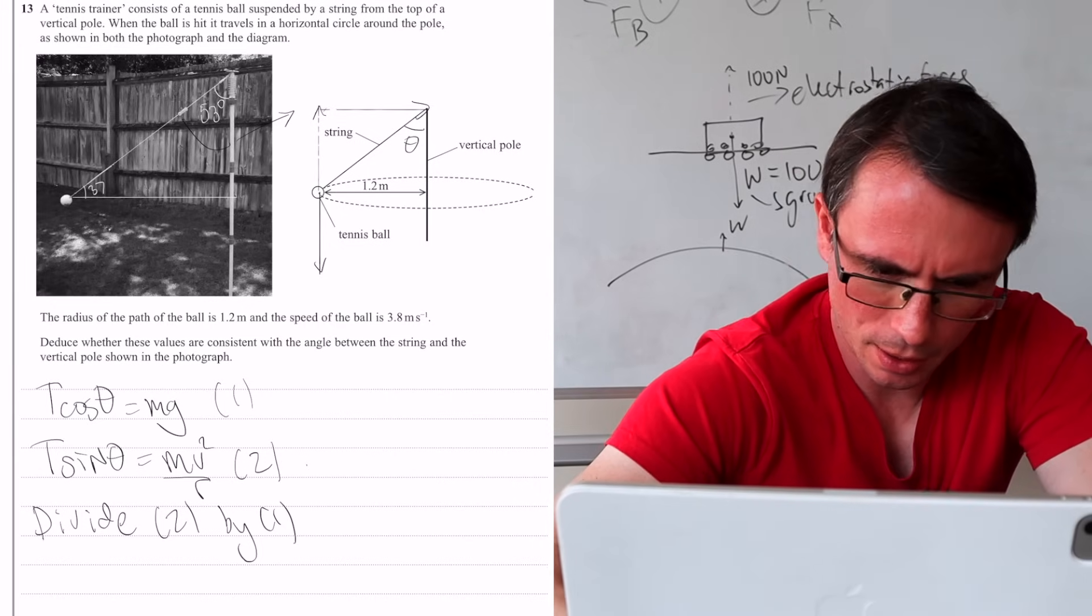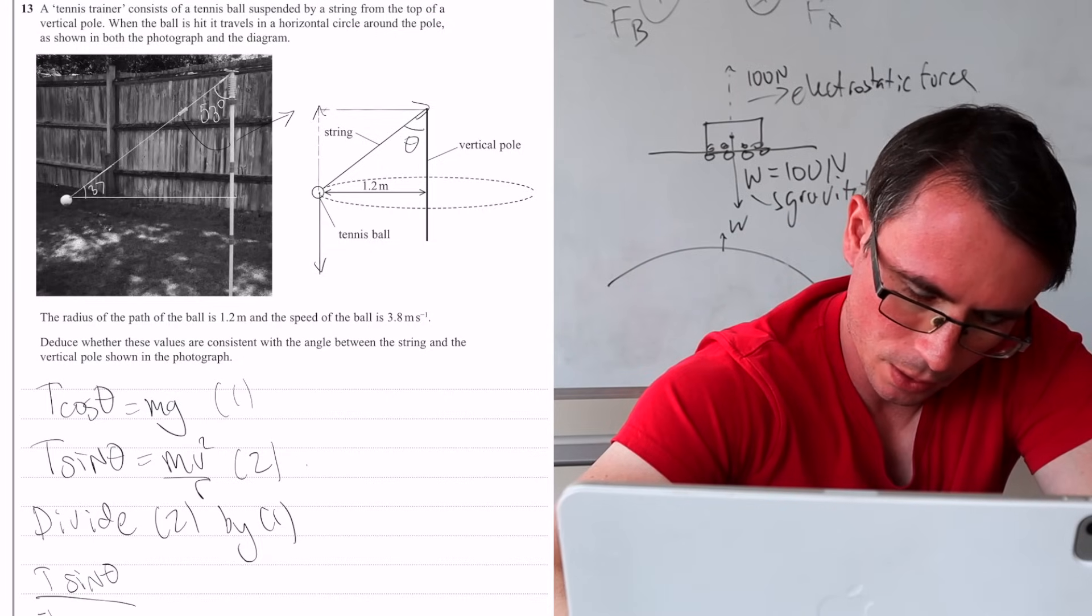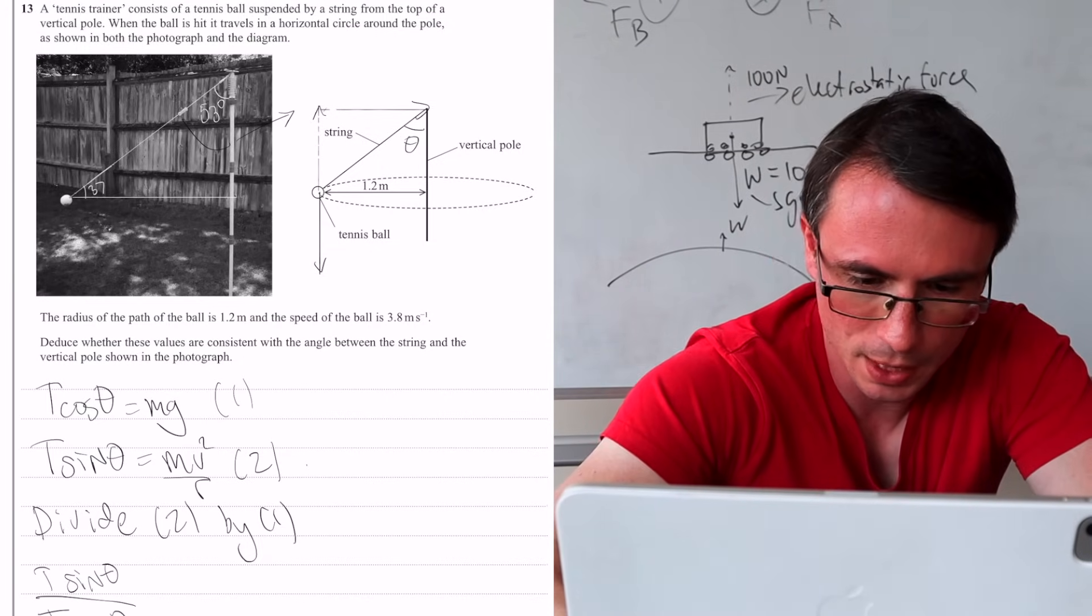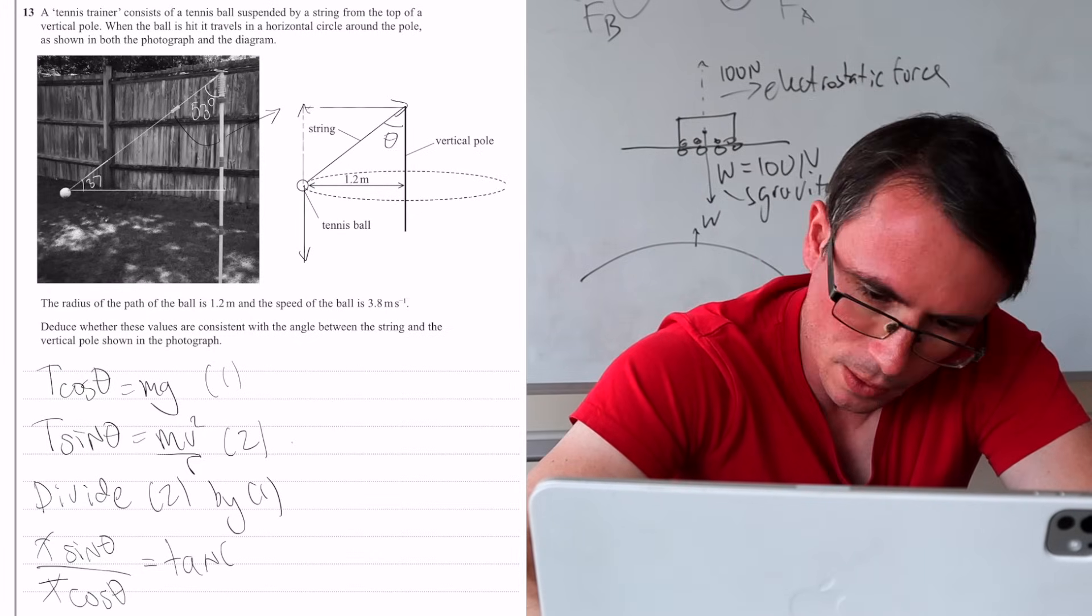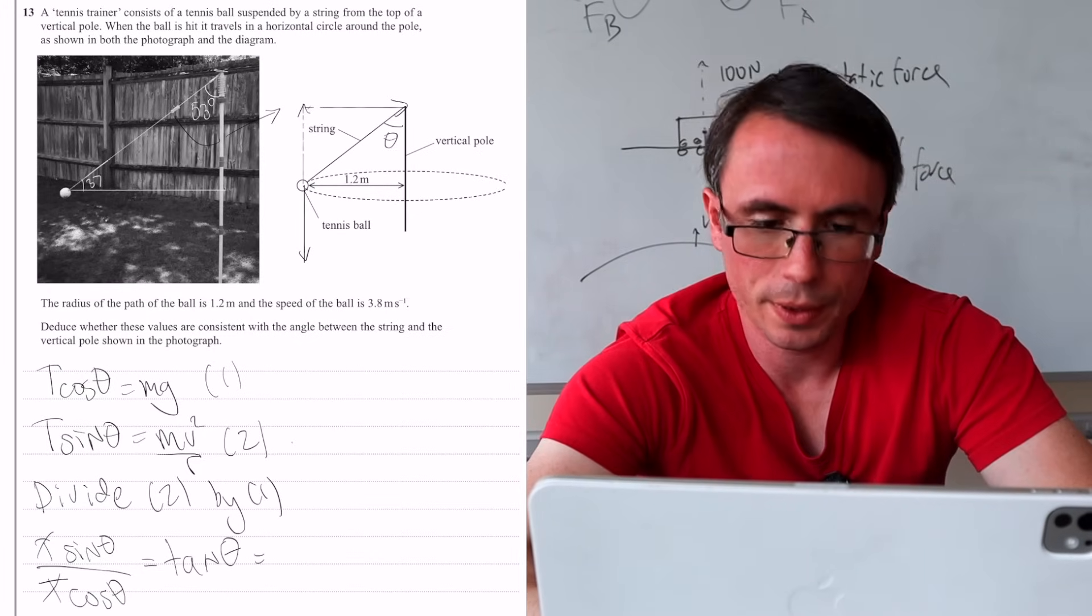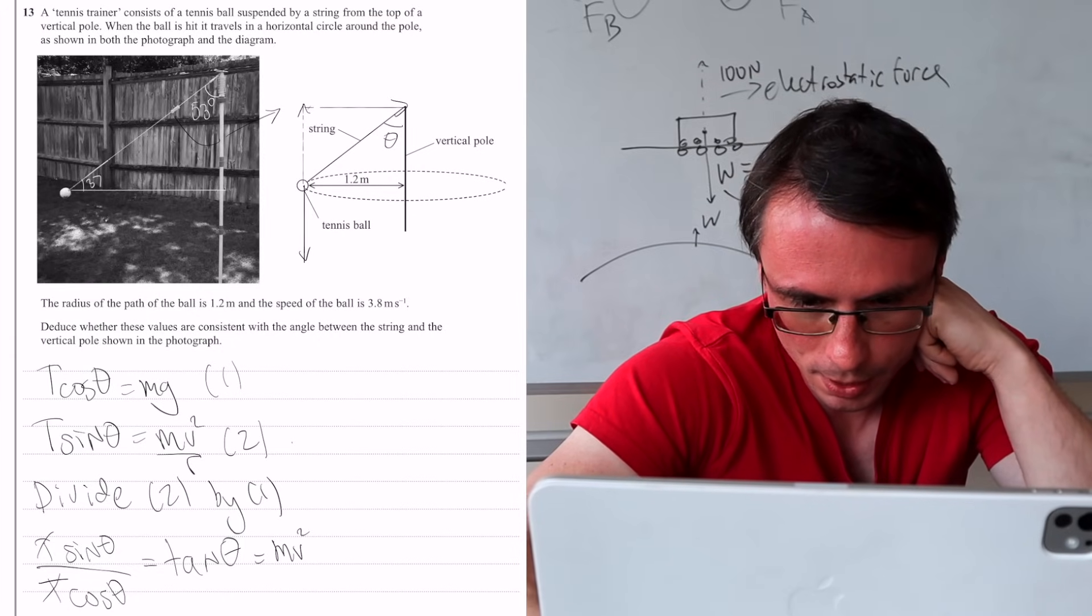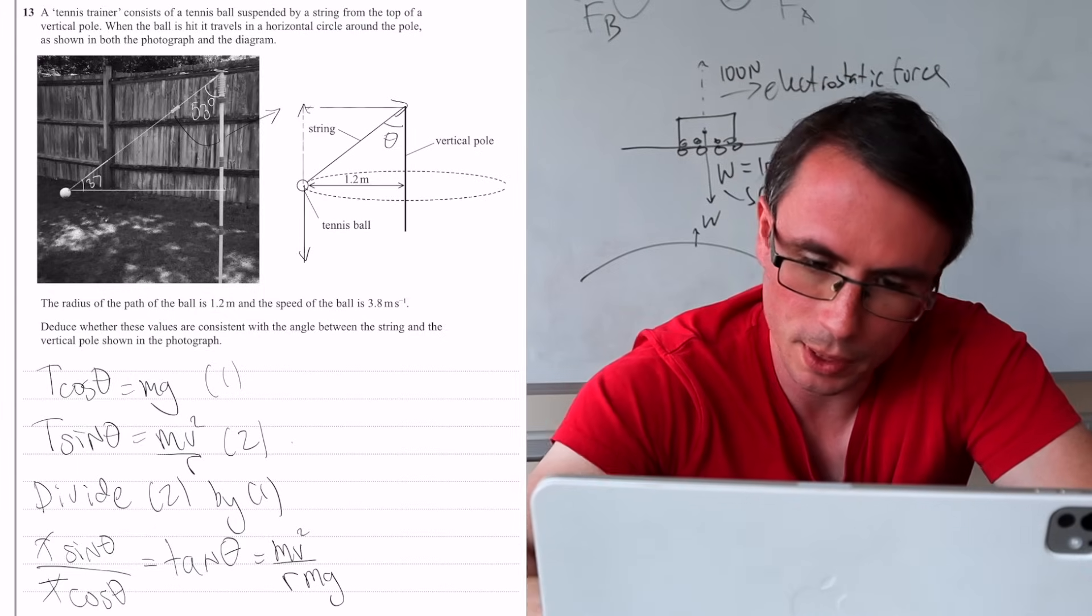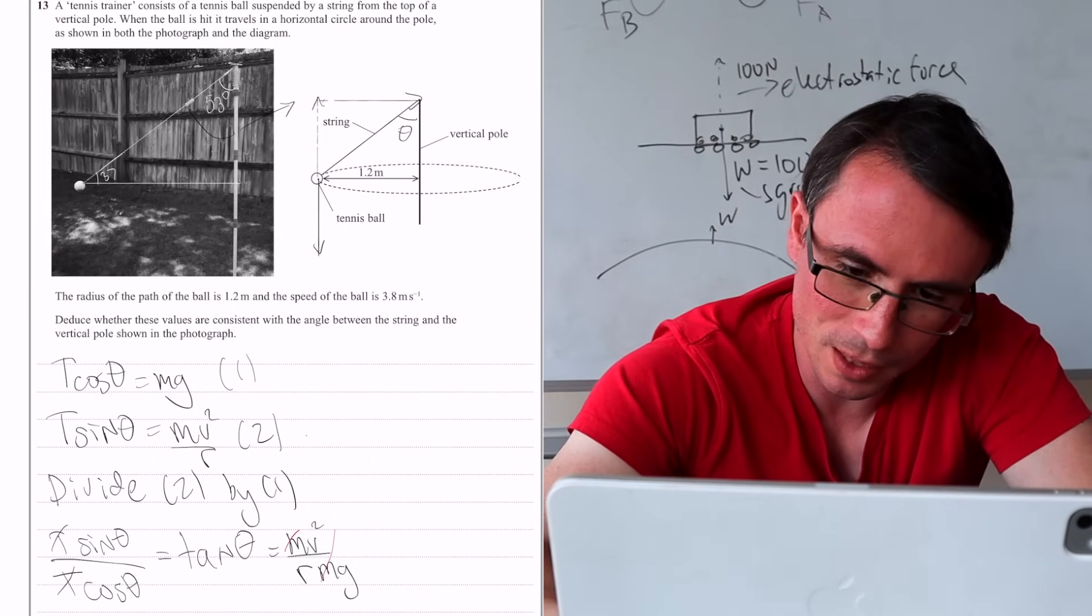What would that give us? So T sine of theta, divide that by T cos of theta. That will just end up giving us tan of theta. So we'll just cancel it out right now and just say that tan of theta. And then on the right hand side, if we were to divide mv squared over r and then divide it by mg, we're going to get this.